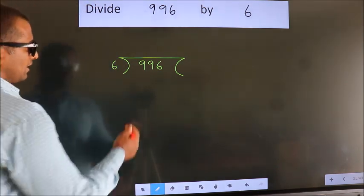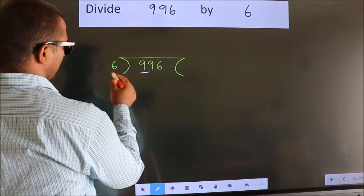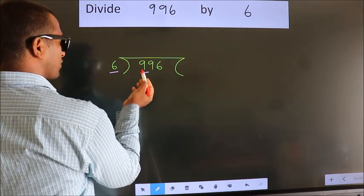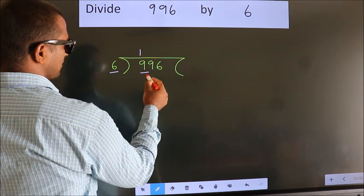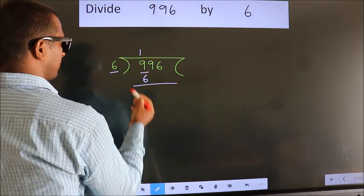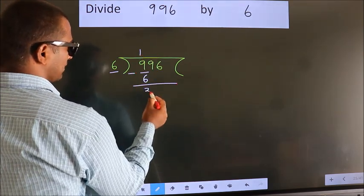Next. Here we have 9. Here 6. A number close to 9 in 6 table is 6 once 6. Now we should subtract. We get 3.